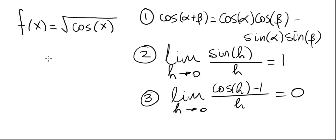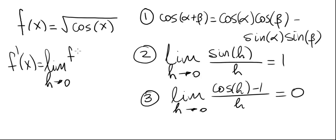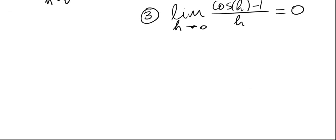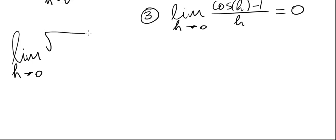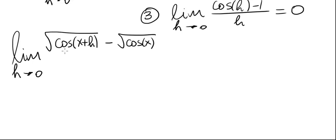So let's begin. Let's recall the definition of the derivative: the limit as h approaches zero of f(x+h) minus f(x) divided by h. In our case, that's the limit as h approaches zero of the square root of cosine of (x+h) minus the square root of cosine of x, divided by h.